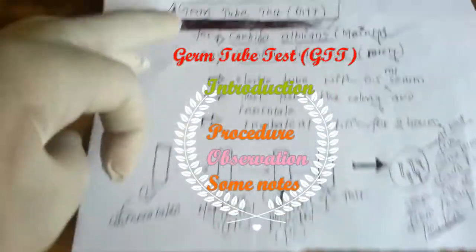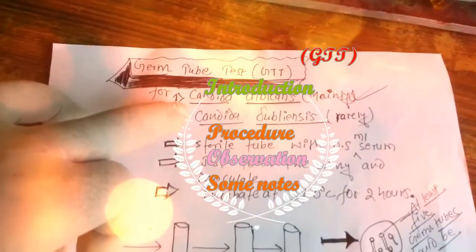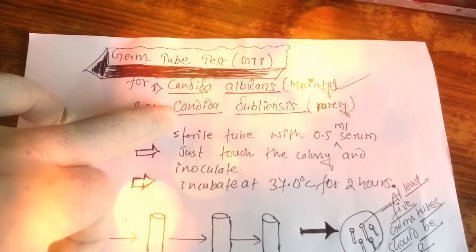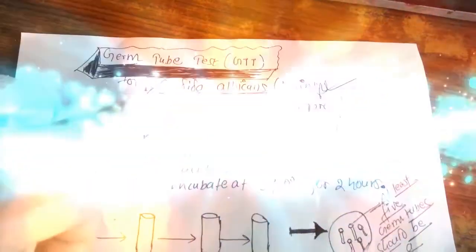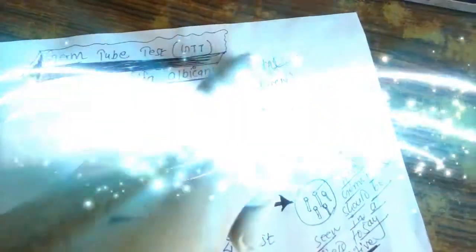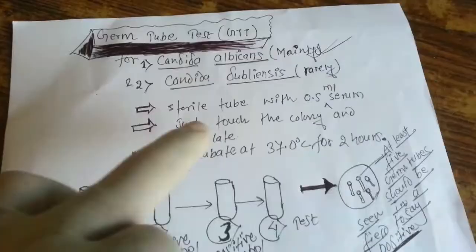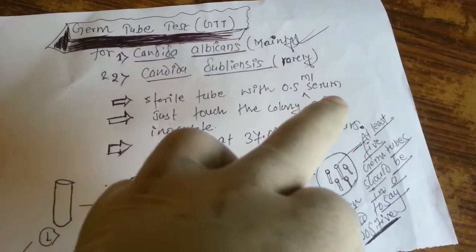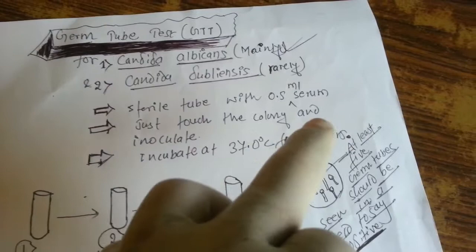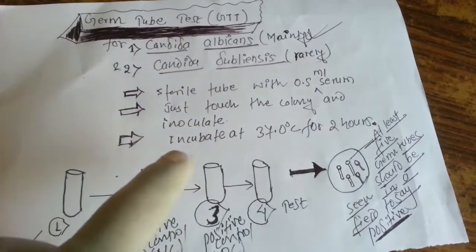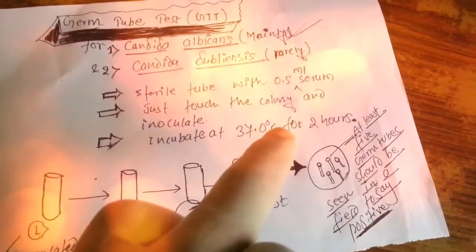Hey everyone. Today I am going to deal with Germ tube test. Introduction. This procedure is used for presumptive identification of Candida species and also called Germ tube test, in short GTT. The demonstration of Germ tube is also known as Reynolds Browder Phenomenon.